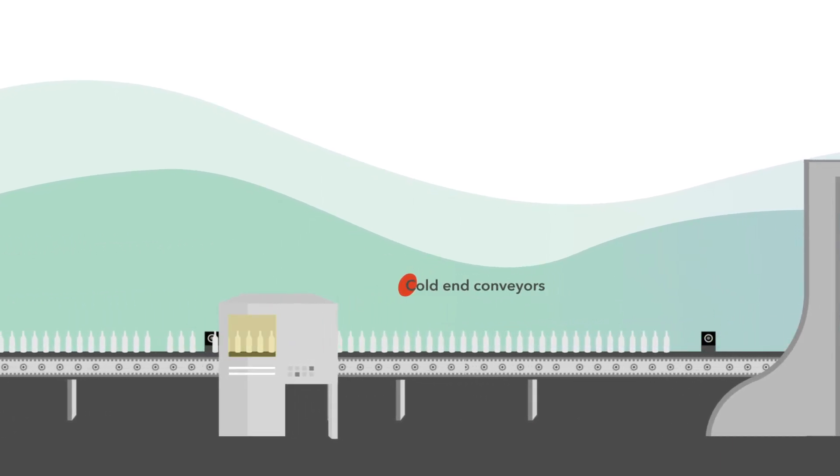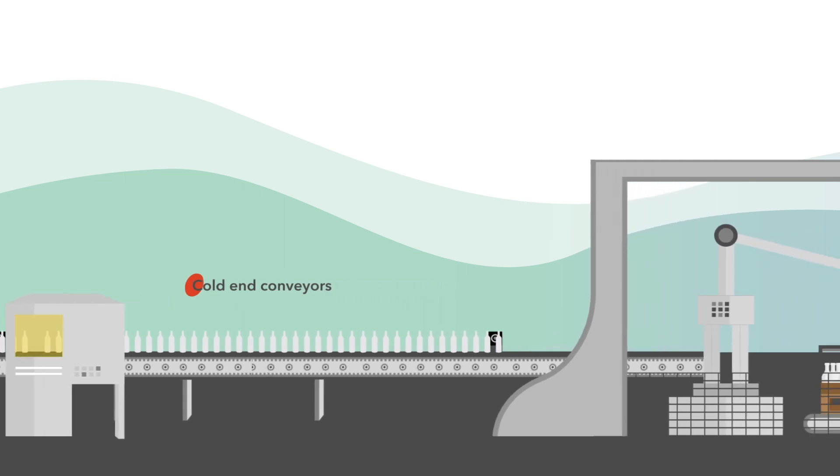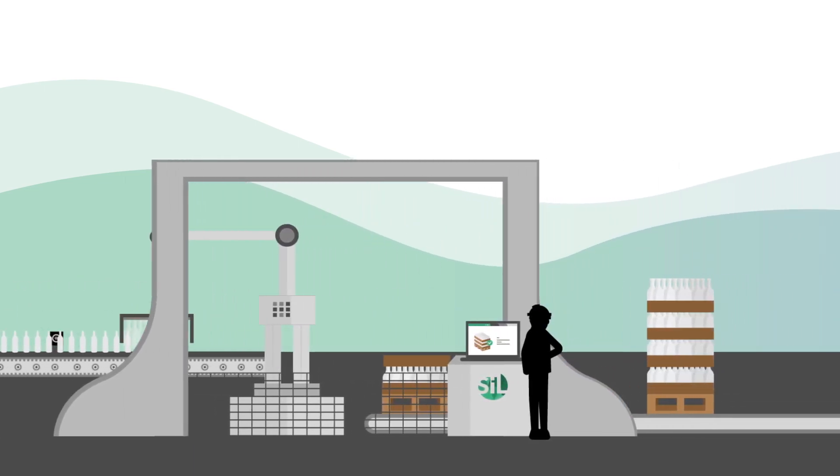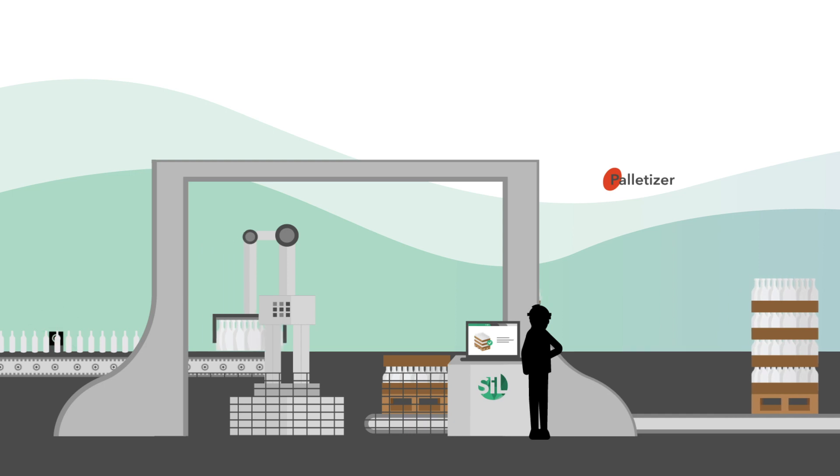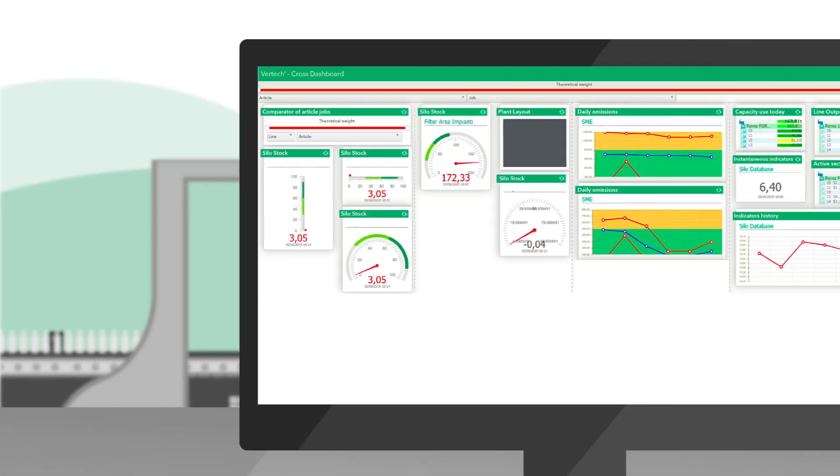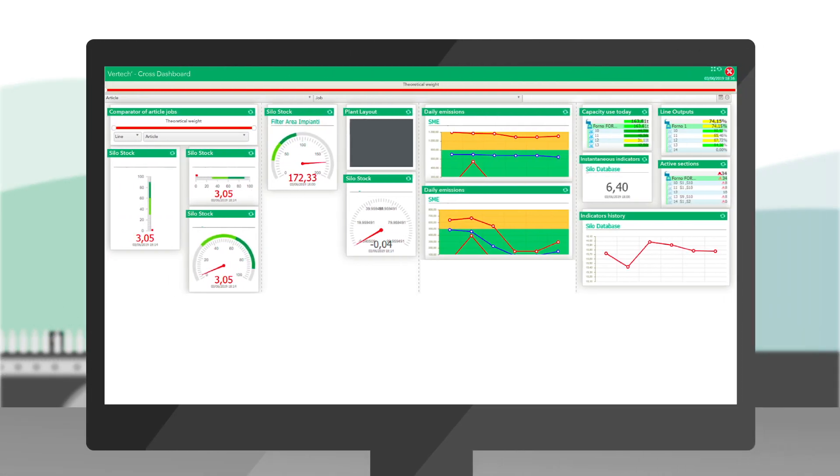Some dashboards can include widgets with data from different parts of the plant and display the most significant information necessary for each position. Managers at the headquarters can access these KPIs and create multi-plant dashboards.